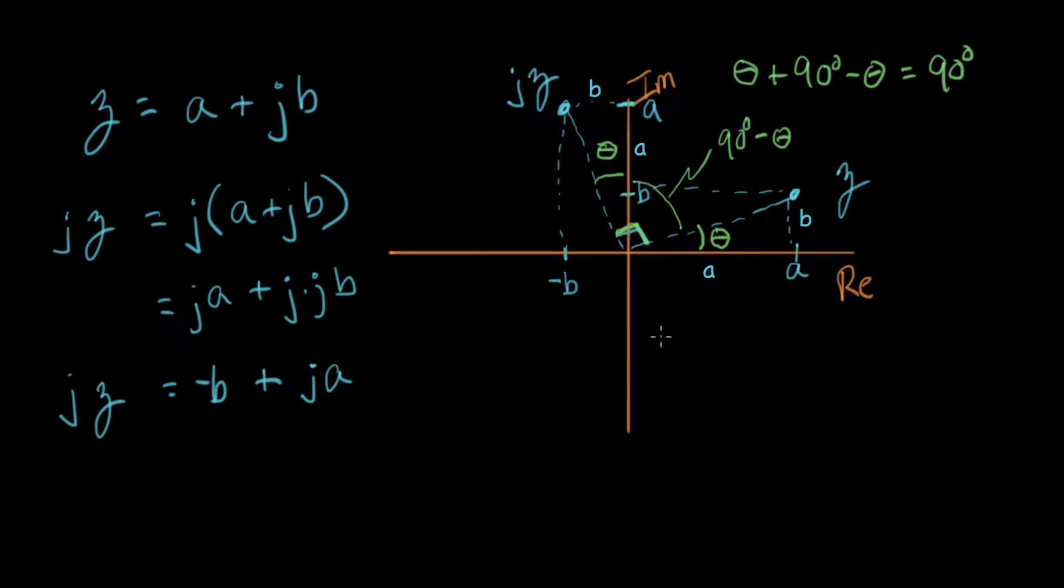So let's do this rotation again, only this time, instead of using the rectangular coordinate system, let's use the exponential representation. So in the exponential notation, we say in general, z equals some radius times e to the j theta, where this is the angle theta, and r is the length of this hypotenuse here, to get out to z.